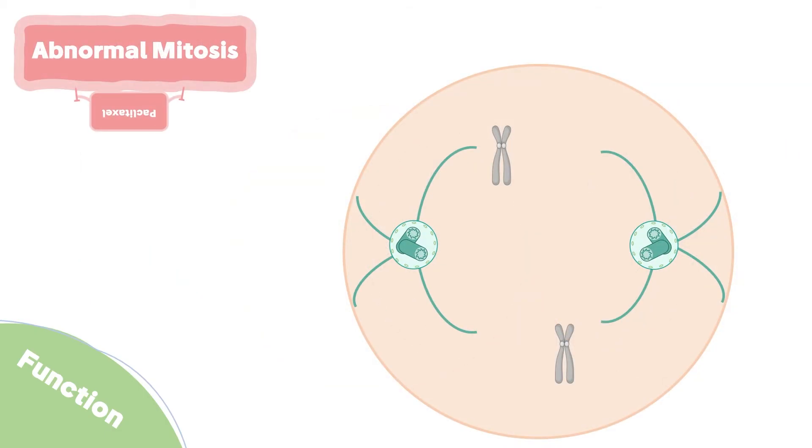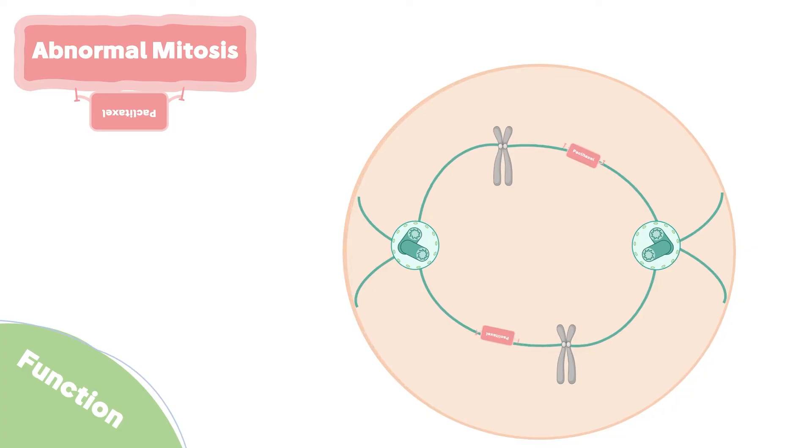On the other hand, paclitaxel presence leads to abnormal mitosis. When paclitaxel binds to the microtubules connected to the chromosomes, it binds firmly with them preventing the pulling of the chromosomes. Therefore, the chromosomes will not be able to align in the middle of the cell.